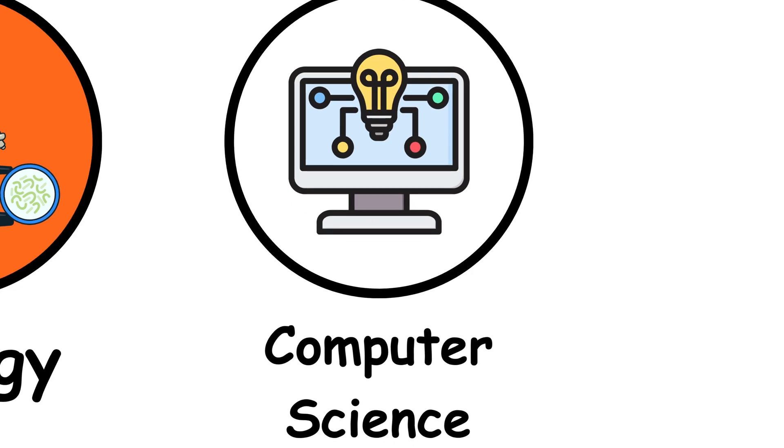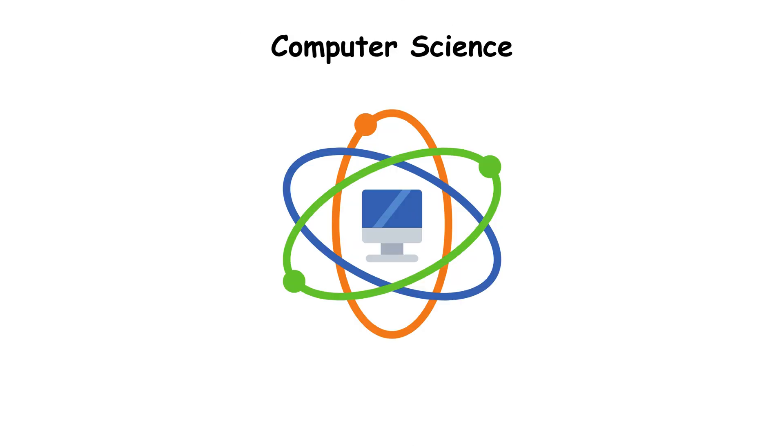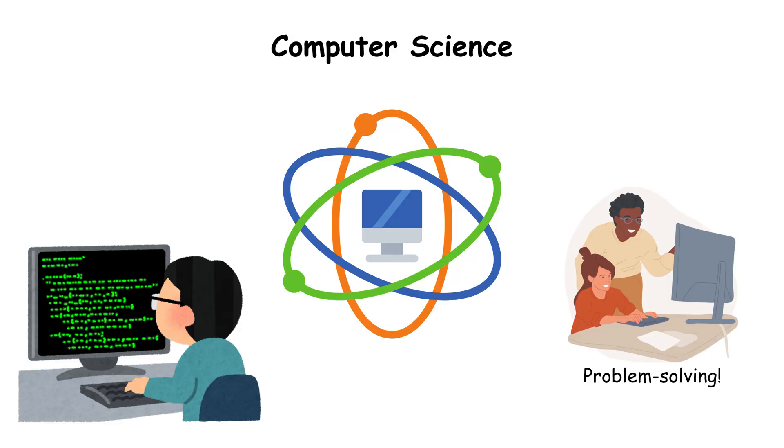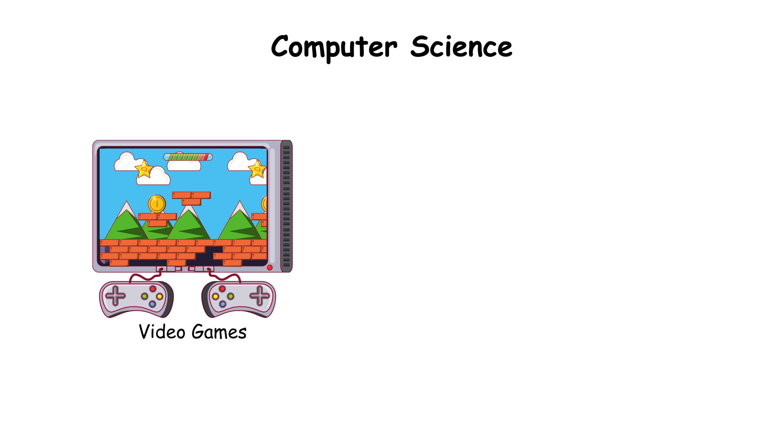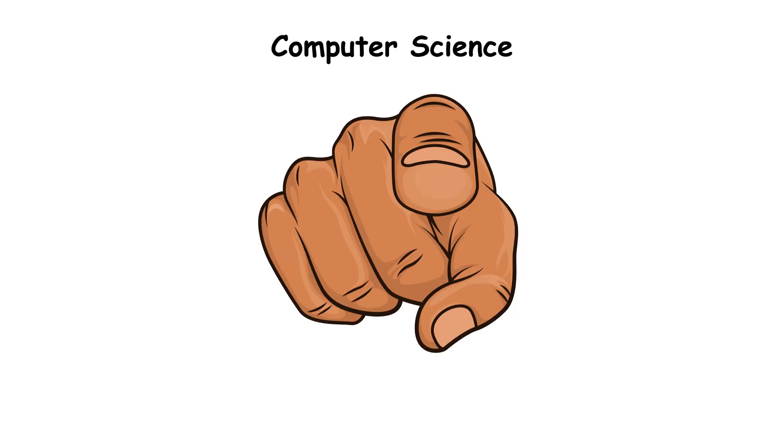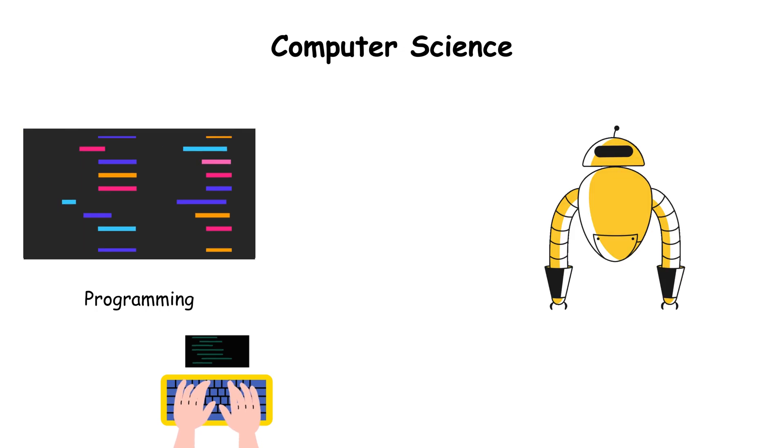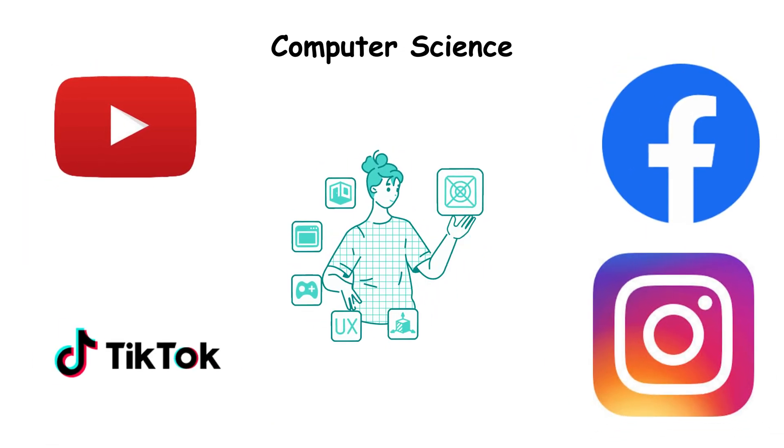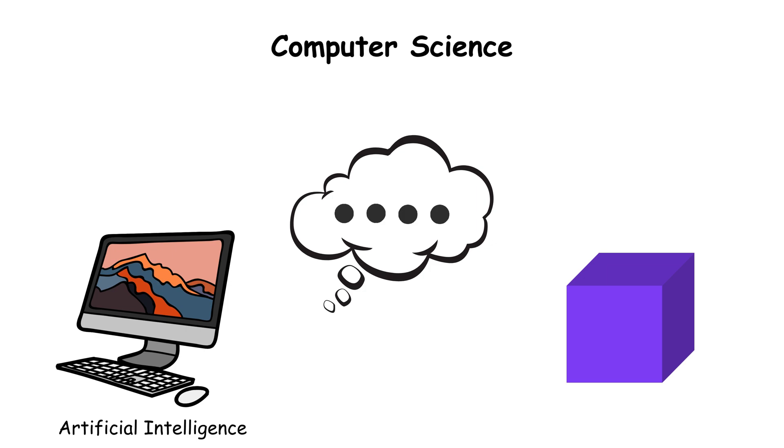Computer science, the digital frontier. Computer science is about problem solving with logic and code. It powers everything from video games to space missions, and yes, even the video you're watching right now. Programming languages are how we tell machines what to do. Software engineering builds the tools we use every day. Artificial intelligence teaches computers to recognize patterns and learn.